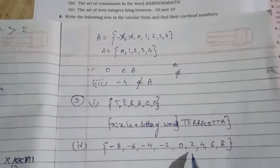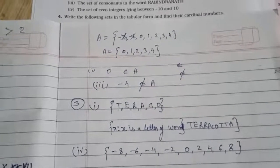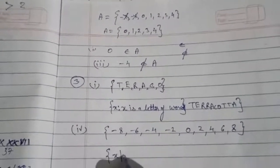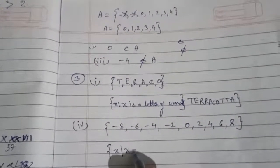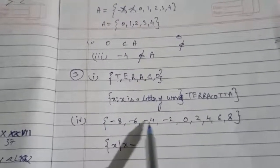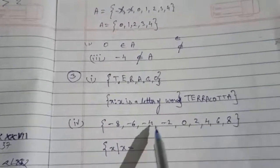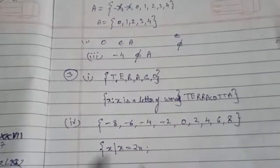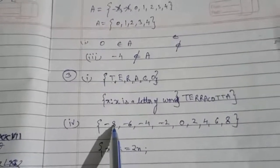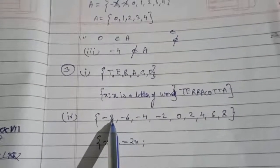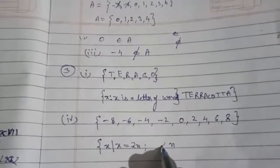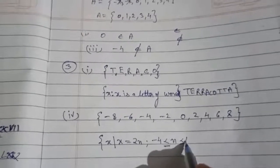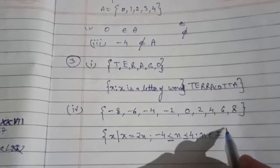Now write it in set-builder form. You write: {x : x = 2n, where n ≥ -4 and n ≤ 4, and n belongs to integers (Z)}. All these elements are multiples of 2. By restricting n from minus 4 to 4 and keeping n as an integer, we get all the required even numbers.